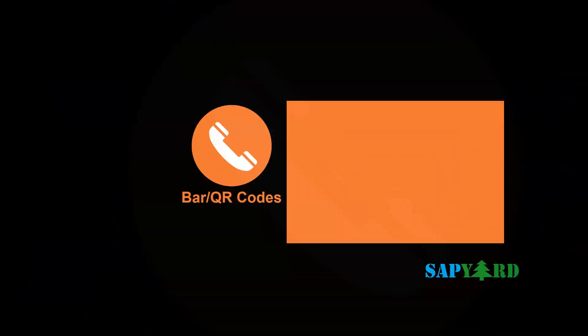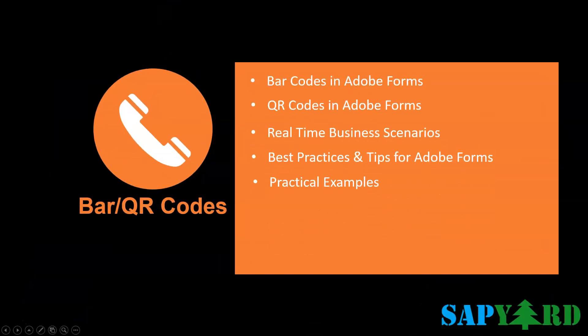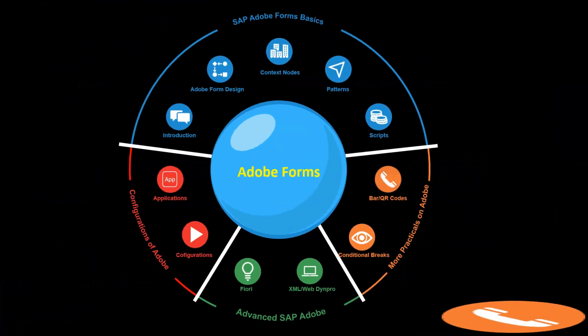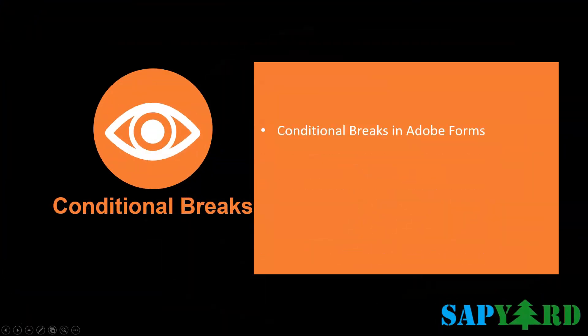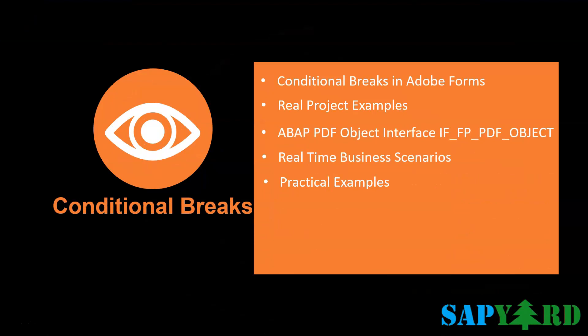Bar Codes and QR Codes are next in our learning series. If you have worked in SAP Script and Smart Forms, you already know how to use bar and QR codes. In this session, we will cover the best use cases to design and place bar codes and talk in detail about the different project requirements where bar codes and QR codes are needed. We will also cover conditional breaks in SAP Adobe Form with real-time examples. ABAP PDF Object Interface is one important interface which we should not miss, and we will explain the need and solutions to use it.